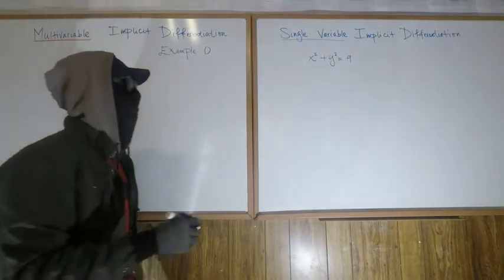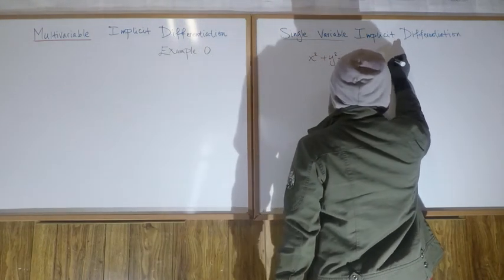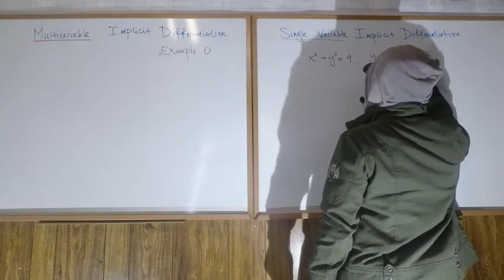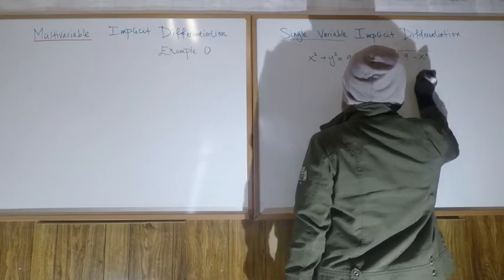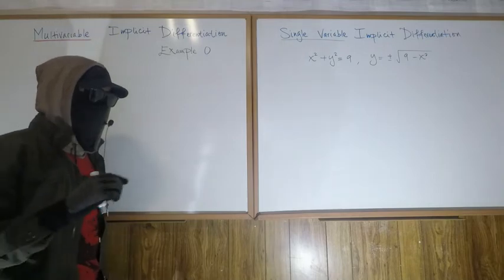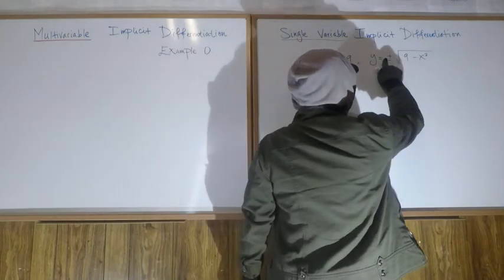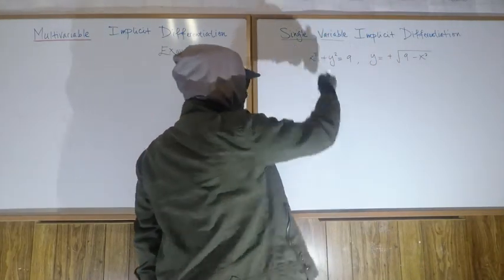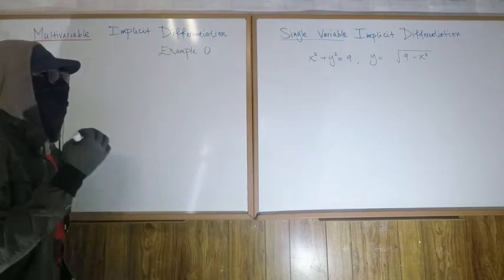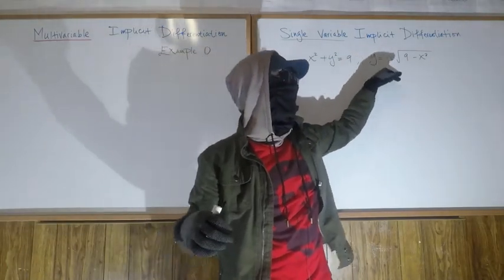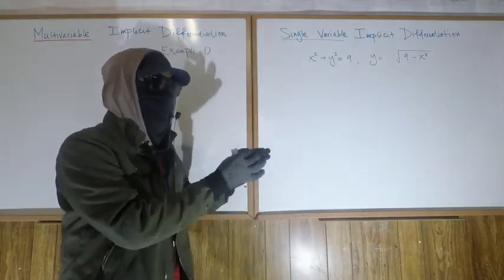We should know this is a circle centered at the origin with radius three. We can solve it for y and write y equals plus or minus the square root of nine minus x squared. We must elect either the positive or negative square root — the positive represents the top half of the circle, the negative the bottom half. Together they don't make a function; a circle doesn't pass the vertical line test.